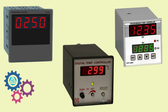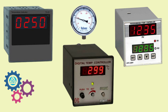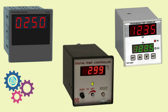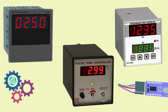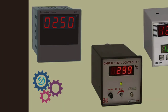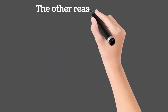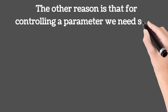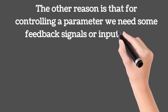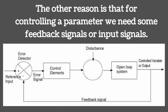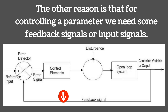Practically, we can't see all the temperature gauge signals at a remote location, so signals are transmitted through a wire and shown on an indicator and controlled by a controller. The other reason is that for controlling a parameter we need some feedback signals or input signals. RTD and thermocouple signals work as feedback or input signals, as shown by the arrow in this image.